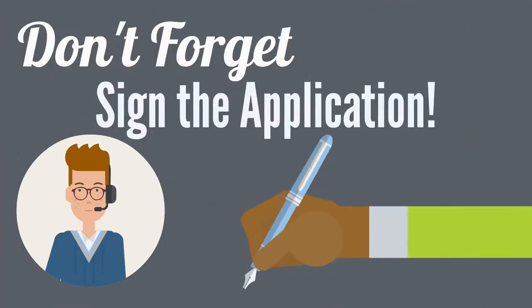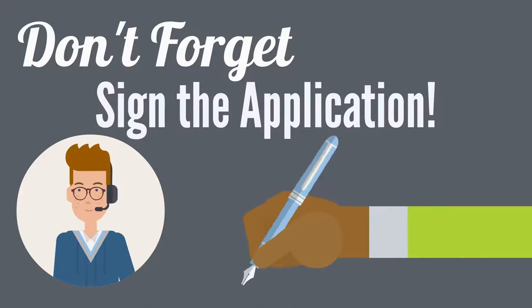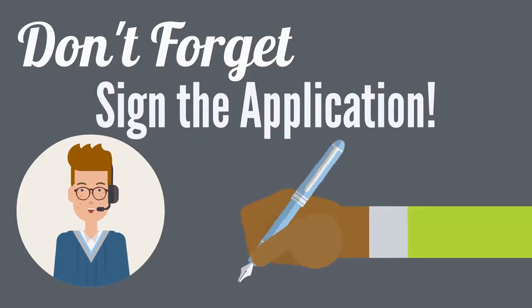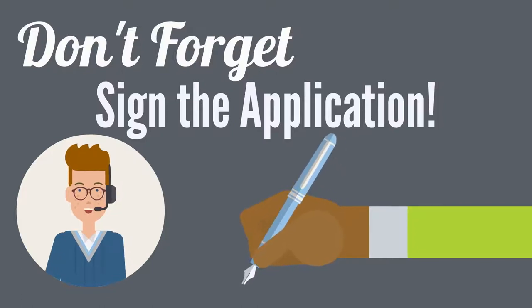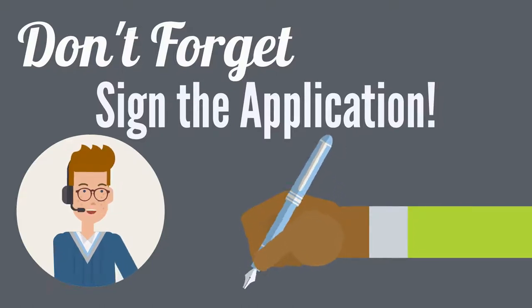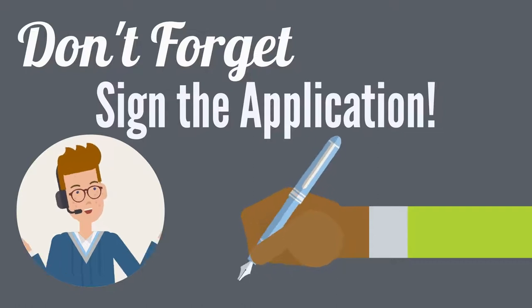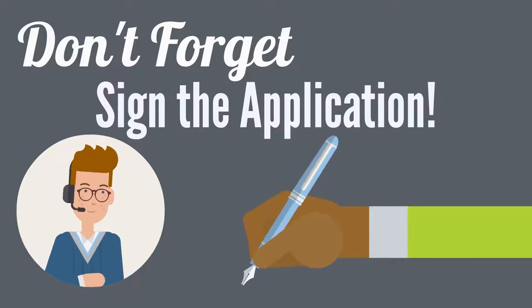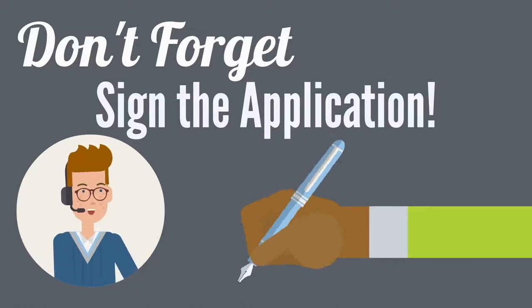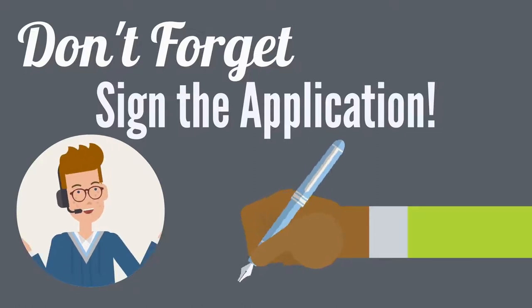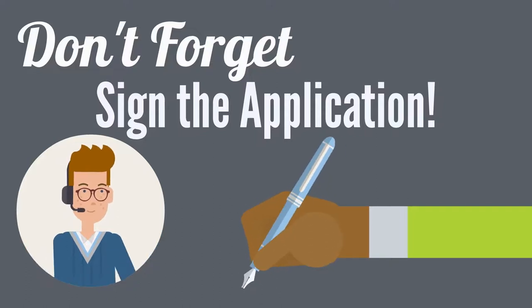Finally, don't forget to sign the application as it is required for processing. If you have a spouse and selected the married response to item 7, your spouse must sign the application as well. In no way are they taking responsibility for the loan — it's merely to certify that the information about their marital status and income is the same.